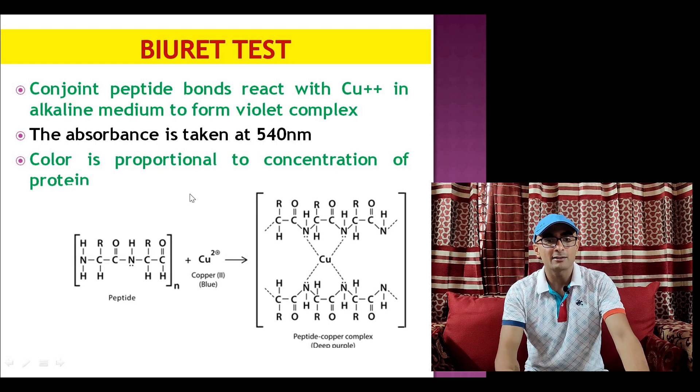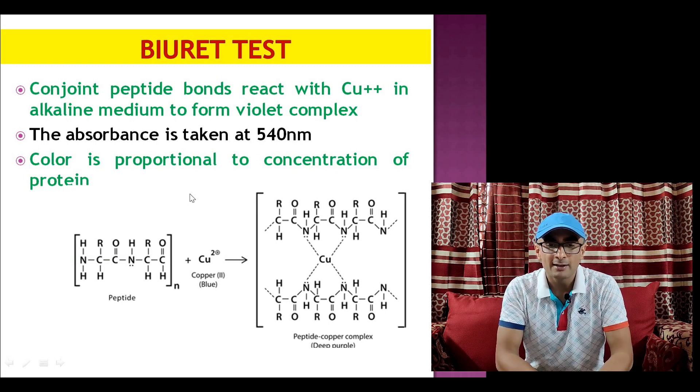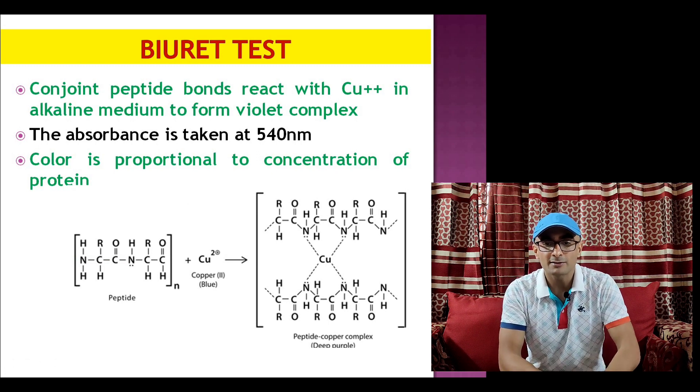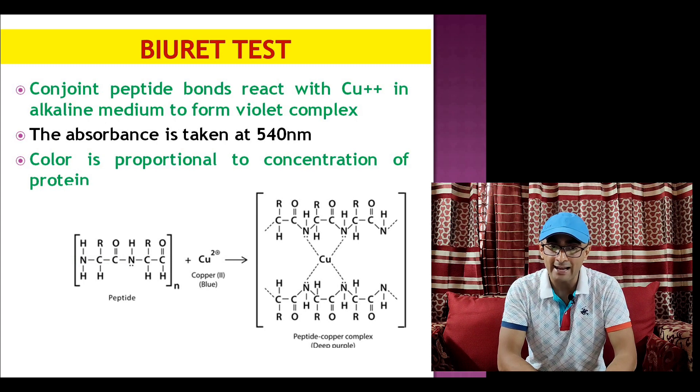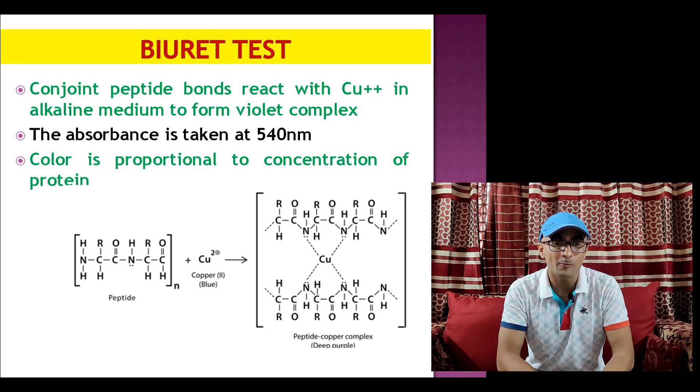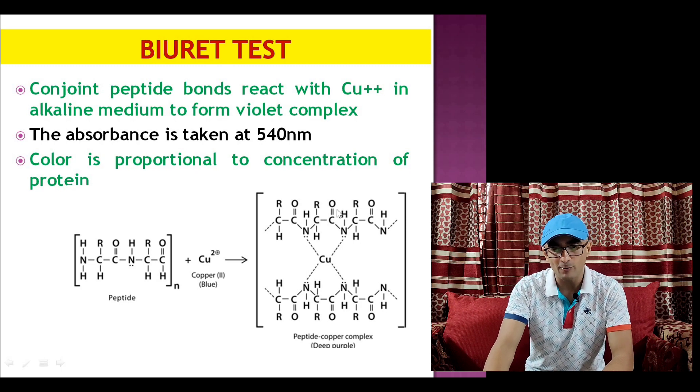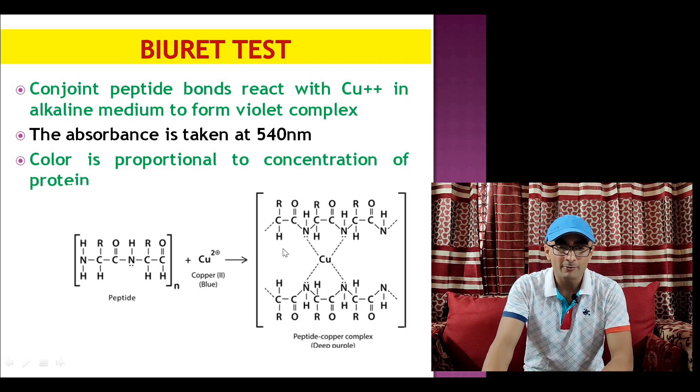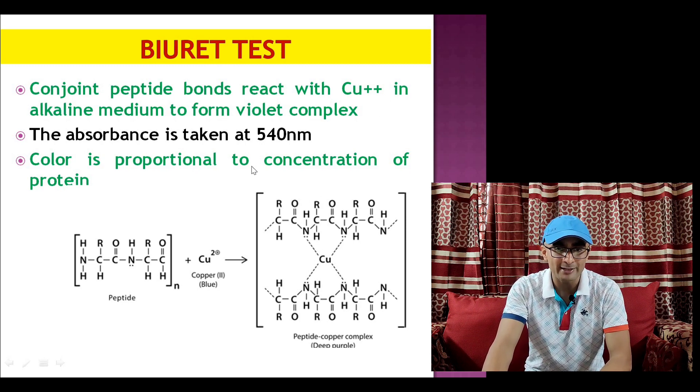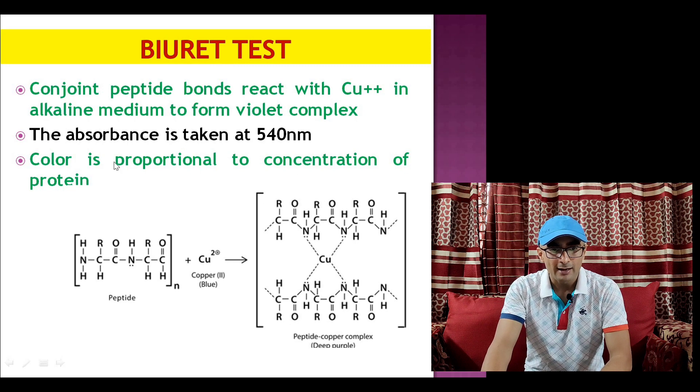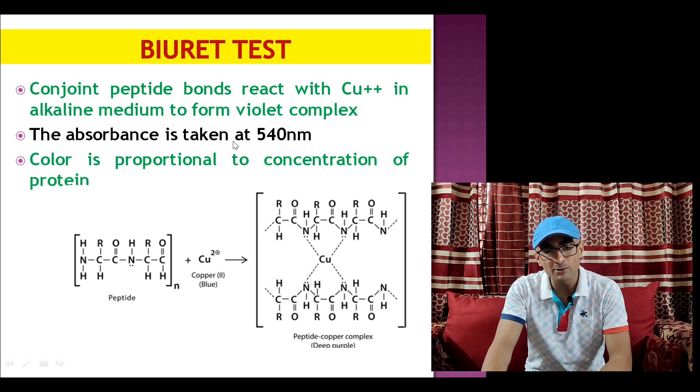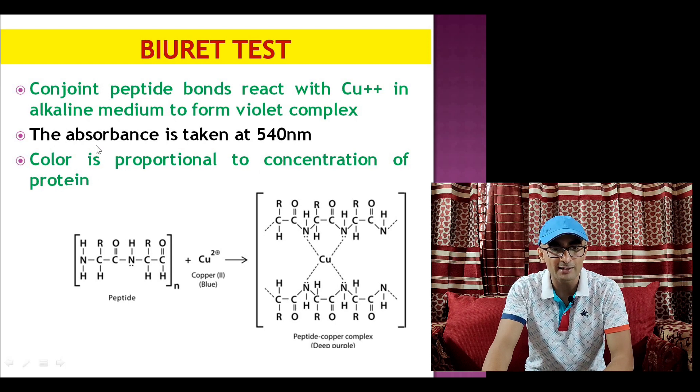In Biuret test the conjoined peptide bonds react with Cu++ ion in alkaline condition and form a violet color complex. This violet color complex absorbs at 540 nanometer wavelength and because this color produced is proportional to the concentration of protein.